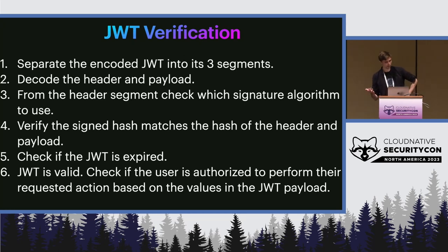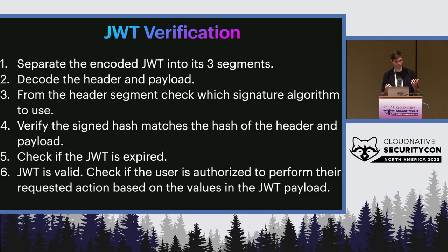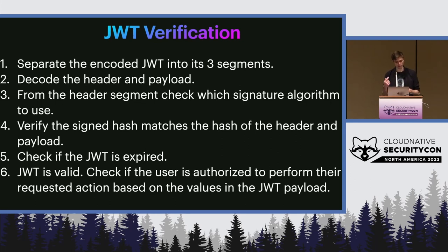Let's break that down into a validation algorithm. We separate the JSON Web Token into its three segments — header, payload, and signature. We decode the header and payload and check from the header which signature algorithm we should use to verify the token. Based on that algorithm, we verify that the signed hash matches the hash of the header and payload we've received. Finally, we check the information: who is this user, is the token expired, is it after the issued-at time? And then we can proceed.